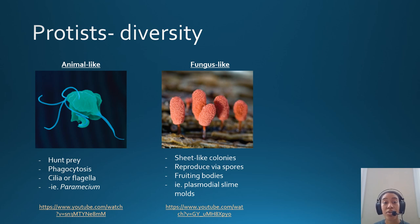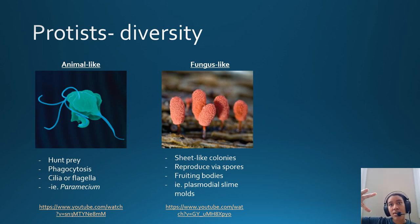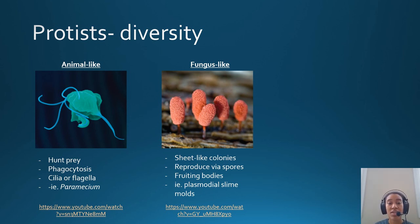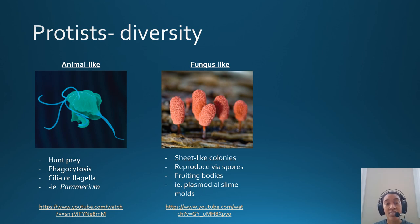Fungus-like protists make sheet-like colonies over a surface — almost like a blanket — similar to how some fungi grow. Even though they look like a fungus, they might not actually be one. Some can reproduce using spores and some have fruiting bodies — characteristics common in fungi, but these are protists. An example are plasmodial slime molds, which are really cool to watch grow. Plant-like protists may even look like plants and are some of the protists that can be multicellular and huge.